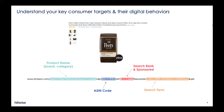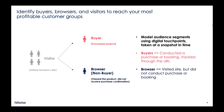We can also determine if the post they clicked on was sponsored or not. So in this example, the consumer searched for Caribou Coffee, but actually ended up looking at Pete's Coffee's Pete Nick Pack. With this information, we can begin to understand the consumer's digital behaviors and determine if they are a buyer or a browser. This is a key step in creating effective programs to reach your most profitable customers.